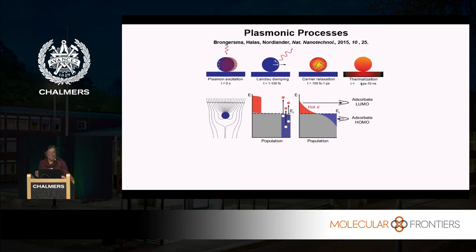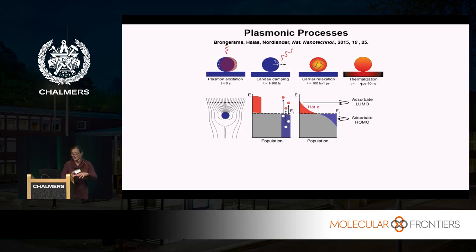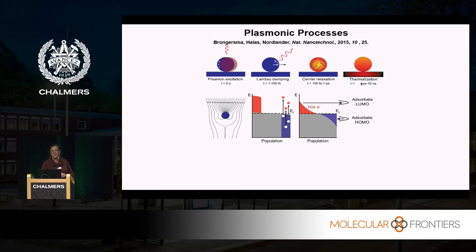So why are plasmonic nanoparticles so interesting? They have a very strong interaction with light at resonance — which means they heat up. These are not emissive particles. The light that they emit is at such a low efficiency — a quantum yield of 10⁻⁵ or 10⁻⁶ — that we don't really want to consider any light emission at all. But the photons they do absorb are dissipated non-radiatively, which means they dissipate as heat.